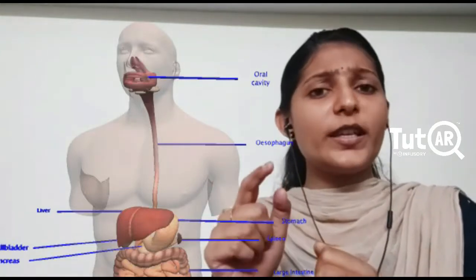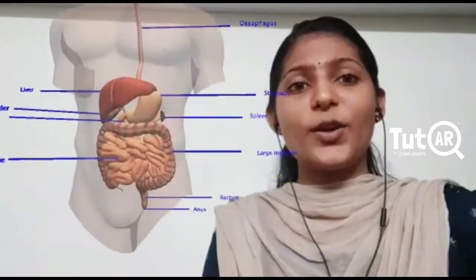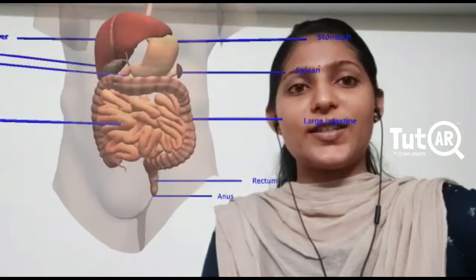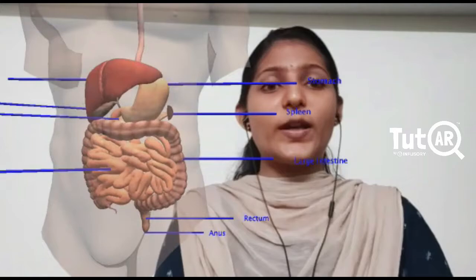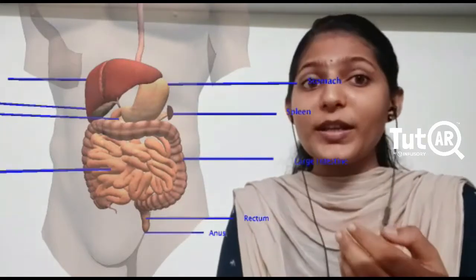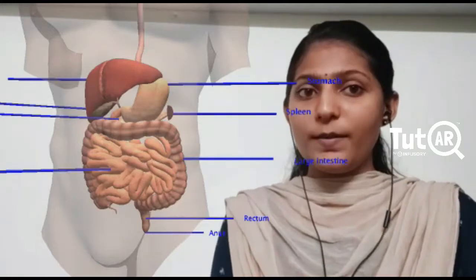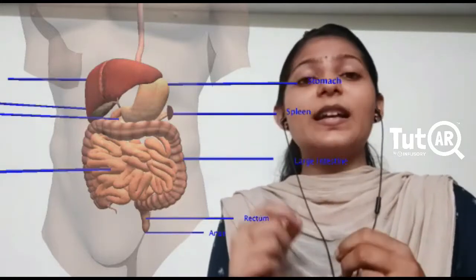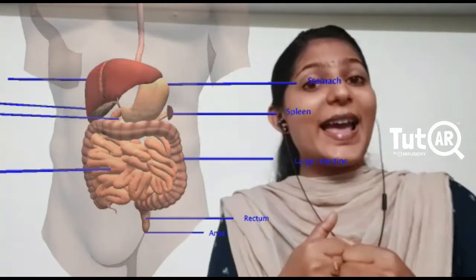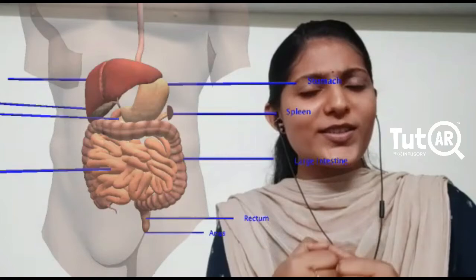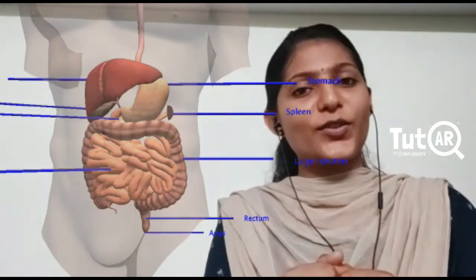So now the bolus or the semi-solid food has reached the part called stomach. So here you see the stomach. Now it is the second place where the digestion starts or the digestion of proteins start. Now stomach has a lining wall and it also have the glands, the gastric glands which secrete some enzymes as well as an acid. Do you know which is the acid produced in your stomach? Yes, it is hydrochloric acid.